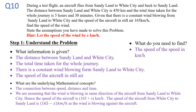So hence the speed of the aircraft will be 165 plus x, because the speed of the aircraft is 165 in still air. If there's a wind blowing in the same direction, it will push the aircraft to move faster. So the speed of the aircraft going to White City will be 165 plus x. Now for the return journey, the aircraft is moving against the wind, so therefore the speed will slow down. Hence the speed of the aircraft from White City to Sandy Land will be 165 minus x. These are the mathematical concepts to take note of before we solve the problem.